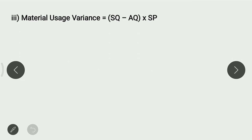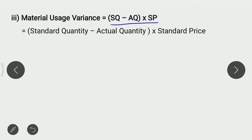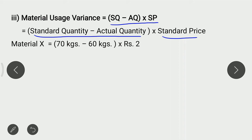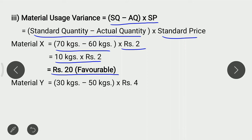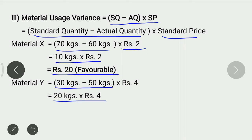Next variance is Material Usage Variance (MUV) = (SQ − AQ) × SP, i.e. Standard Quantity minus Actual Quantity multiplied by Standard Price. For Material X: (70 − 60) × Rs. 2 = 10 × 2 = Rs. 20 Favorable. MUV of Material X is Rs. 20 Favorable. For Material Y: (30 − 50) × 4 = −20 × 4 = Rs. 80 Adverse. MUV of Material Y is Rs. 80 Adverse.